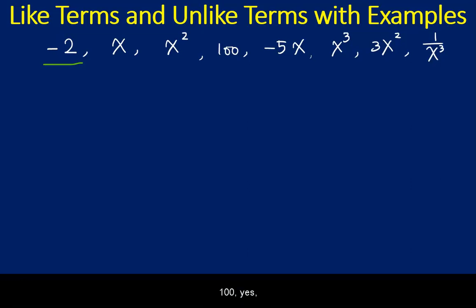x squared, not a constant. 100, yes, it's a constant. So negative 2 and 100 are constants. They are like terms.